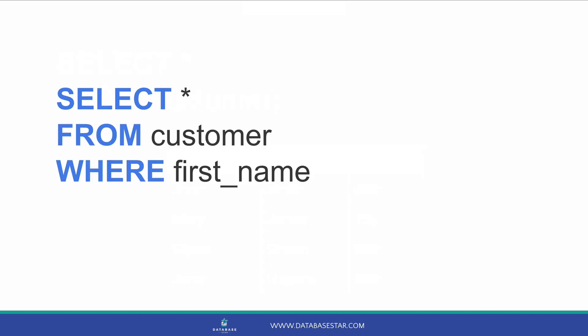We add a WHERE clause because we want to filter our data to only show some records. Next, we specify the column we are looking up. We said we wanted to only show customers where their name begins with M, so we are looking at the name column. Now we add the LIKE keyword after the name. Don't add the equals operator, as this will look for an exact match and we want to do a partial match.